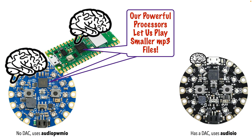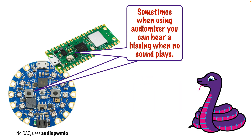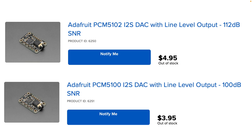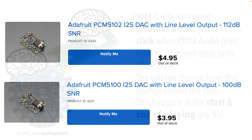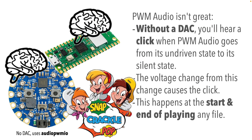The reason for this is that the Picos — I've used both Pico and Pico 2Ws in my course — don't have what's called a DAC, or digital audio converter, built into the hardware. So in this lesson, I'm going to show you how you can add a low cost DAC for better Pico audio. Without a DAC, Pico boards use what's called PWM, or pulse width modulation, when playing sound. Without a digital audio converter, clicks or pops occur when the board takes the PWM audio engine from its undriven state to its silent state.